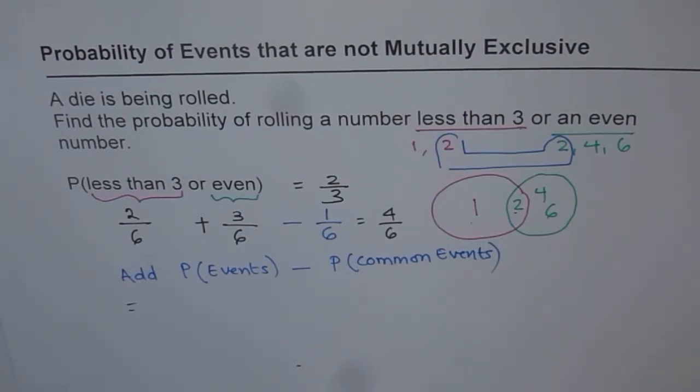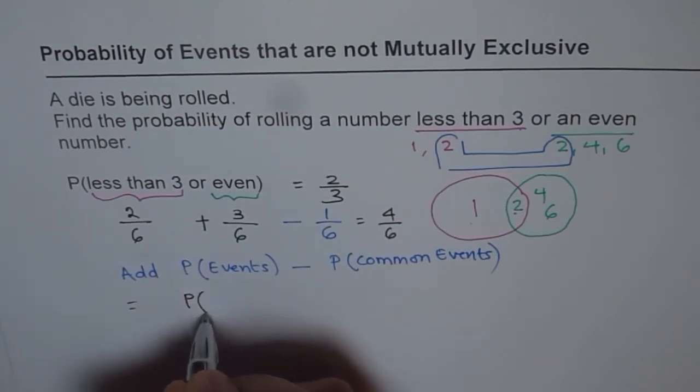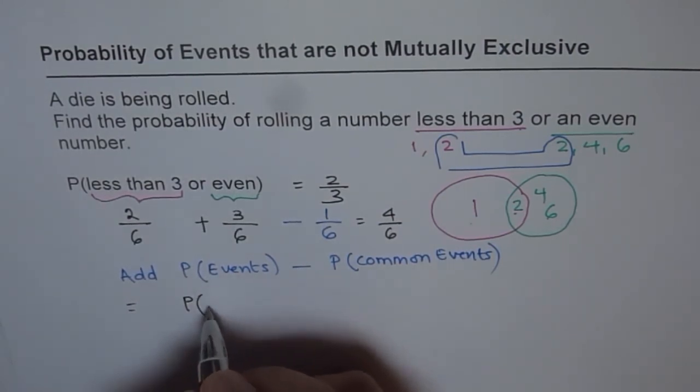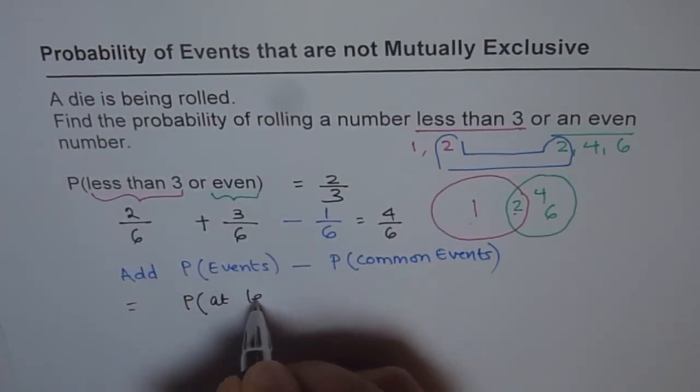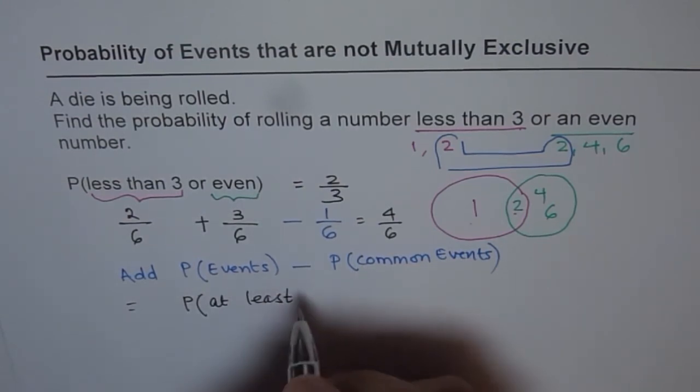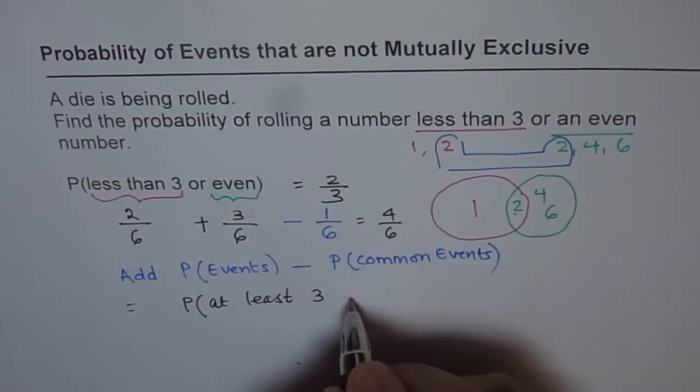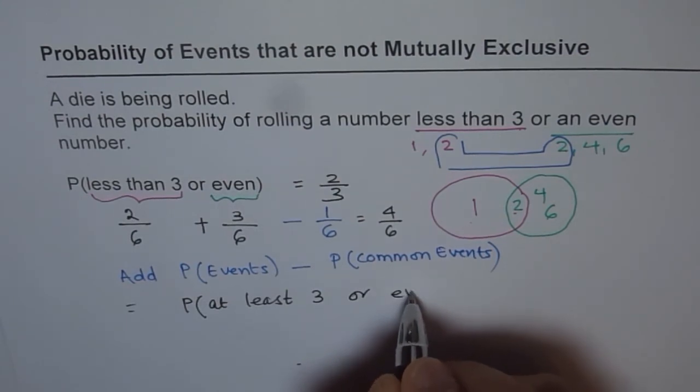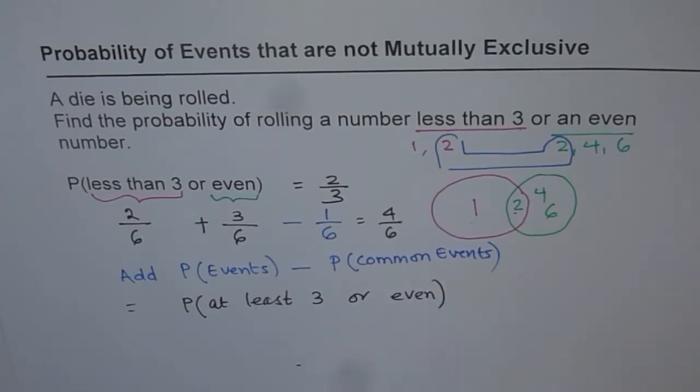Now, for you as an exercise, find the probability of number at least 3 or even. So find this answer and also explain me how this is different from that. Less than 3 is at least 3. So make a note of this and try to do this question. You should get a different answer. And let me know if you have difficulty. Thank you and all the best.